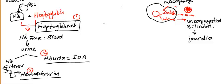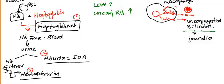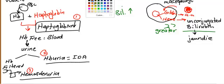In both types of hemolytic anemia, keep in mind that LDH is increased and unconjugated bilirubin is increased. However, unconjugated bilirubin is much, much greater in extravascular hemolysis compared to intravascular hemolysis.